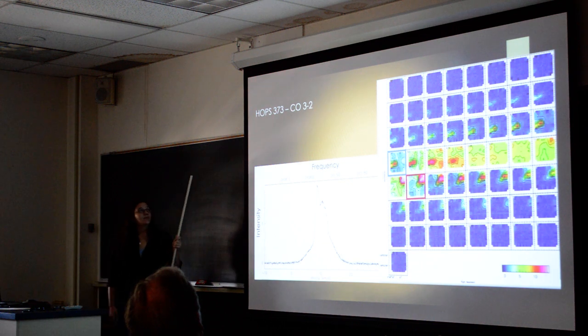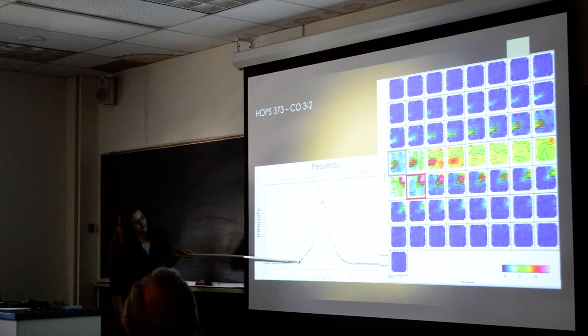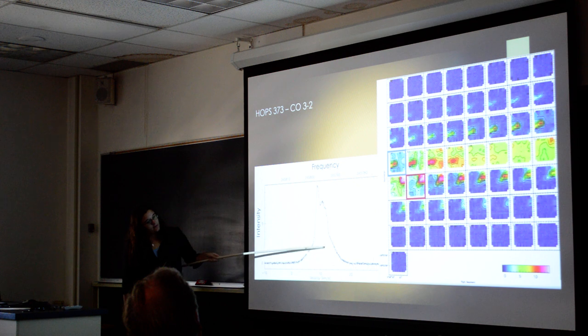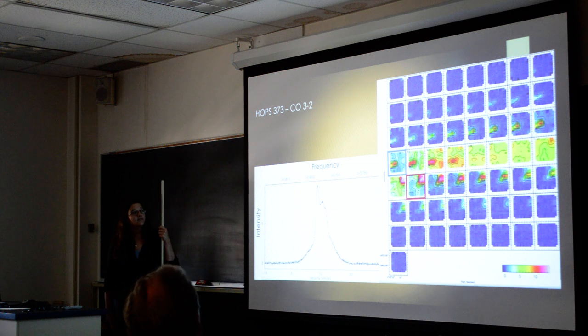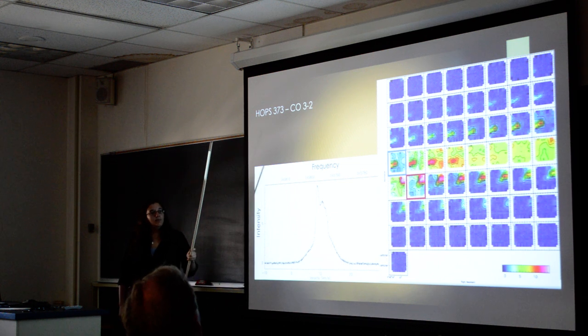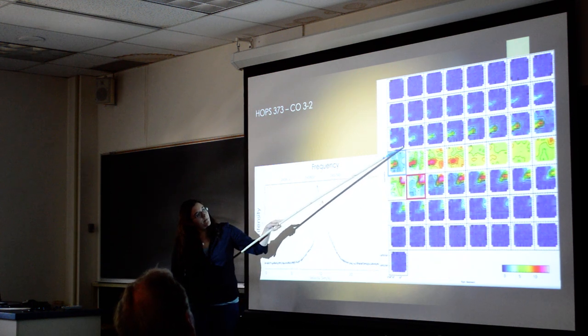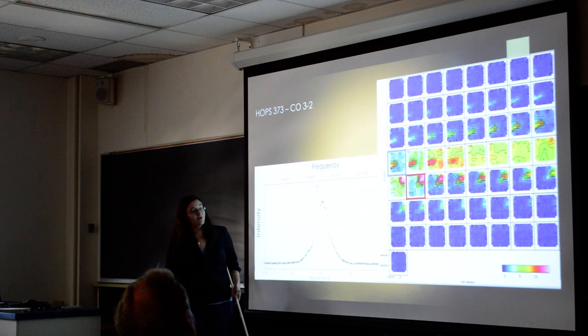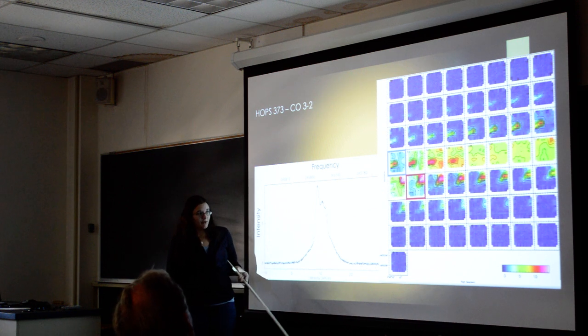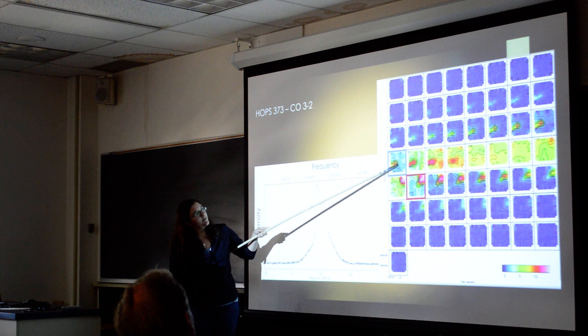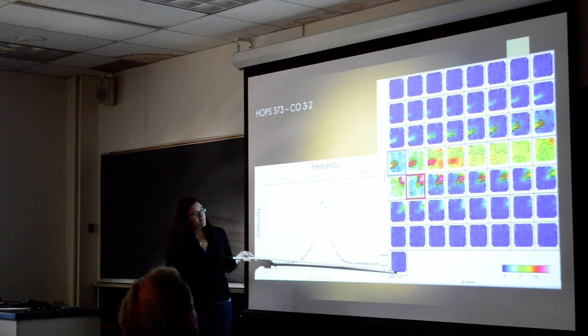Those are the type of graphs we would look at initially to try to find sources with outflows. One of the best examples of this would have been with HOPS 373. As you can see here, we have these gradual inclines that go steeper and then come back down in the same way. That's good evidence that there's probably an outflow in this source. Once we saw evidence of these, we would make a channel map of each. As you can see, there are different lobes, and they come from different directions, indicating that they're probably from the same source. The blue box is indicative of where the blue lobe starts and the red of the red lobe. So we would say from here to here was the blue outflow, and from here to here was the red.